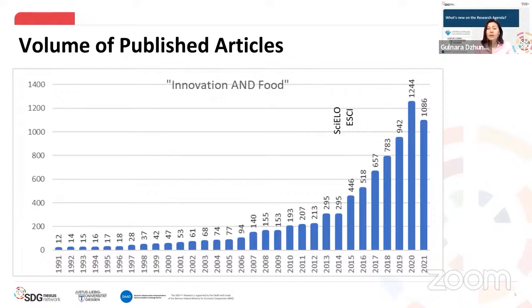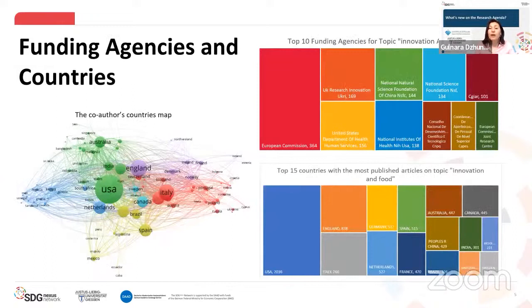The next research direction was to analyze the composition of papers according to the publishing country or region, not related to the author's origin. When we analyzed the total number of papers from the sample database, we identified that 70% of the total papers were published in the 15 top countries. The USA is the country with the most published articles at 17%. Europe, represented by Italy, Germany, Netherlands, Spain, France, and the UK, presented 32% of total articles.